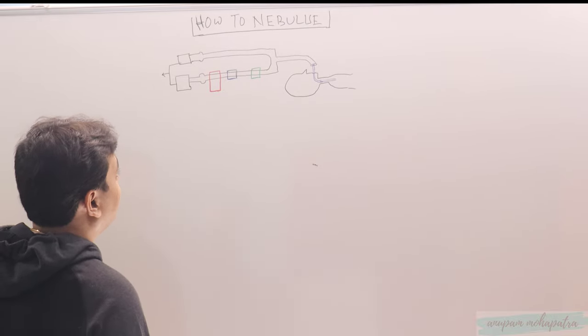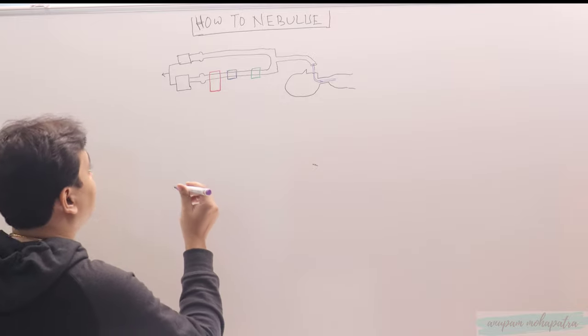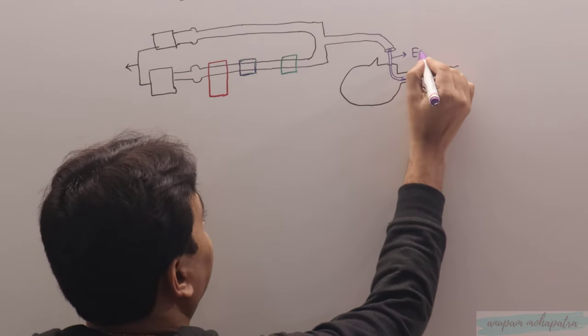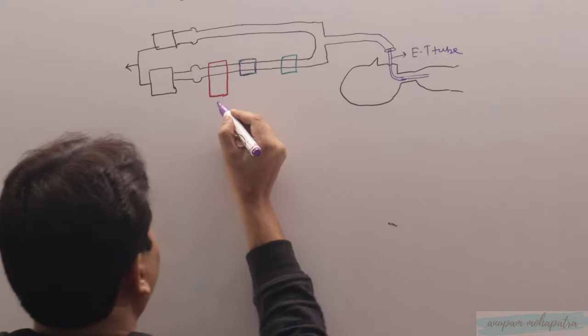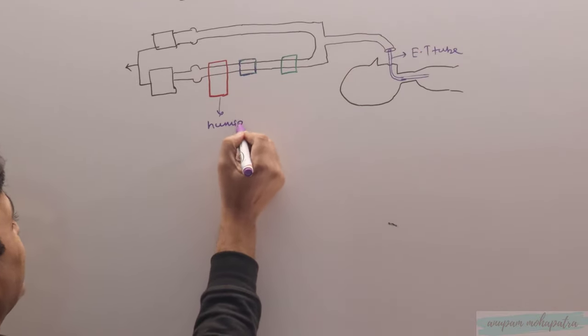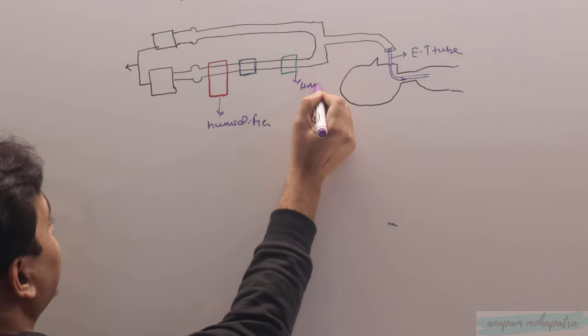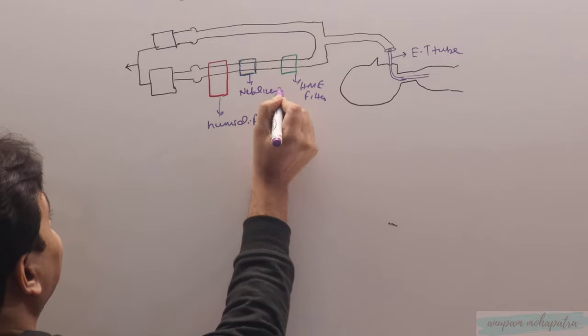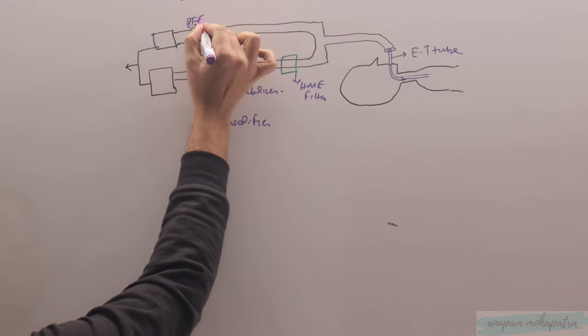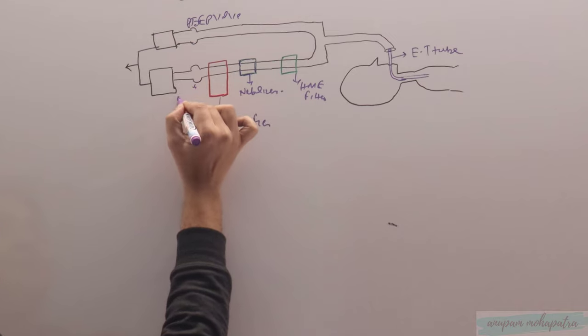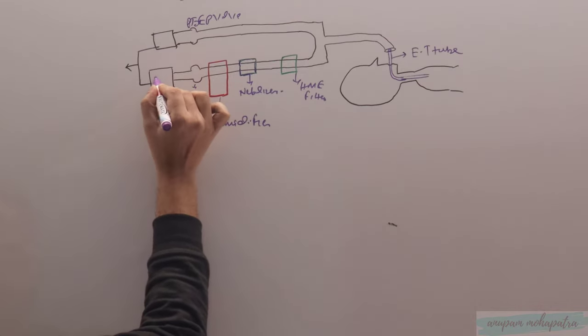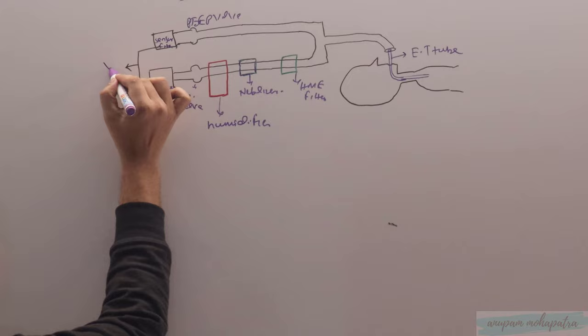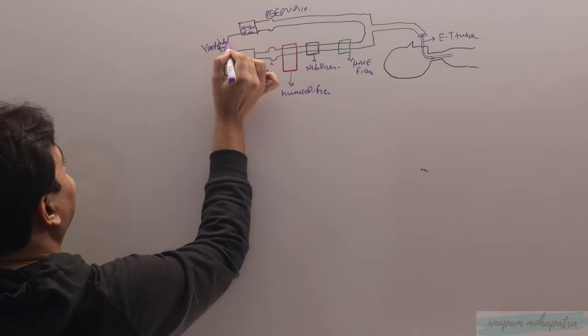I have already drawn a pictorial diagram of a patient being ventilated. Let's nomenclature it: this is the ET tube, this is the humidifier, this is the HME filter, this is the nebulizer, this is the PEEP valve, this is the inspiratory valve, this is the oxygen source, this is the sensor and filter, and this is part of the ventilator.